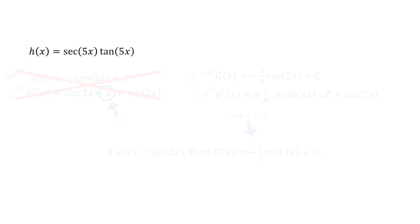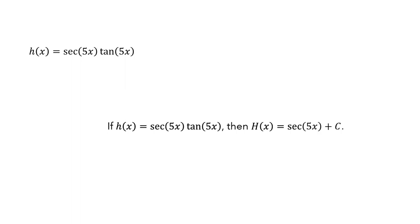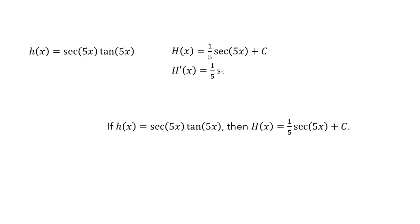Next, let's look at h, which is secant of 5x times tangent of 5x. We have a rule for secant tangent — the antiderivative is secant. Since we have 5x inside, and when we had 2x inside the sine function we had to multiply by one-half, let's try multiplying by one-fifth. So our guess for the antiderivative of h is one-fifth secant of 5x plus c. Using the chain rule, the derivative is one-fifth times secant(5x) times tangent(5x) times 5, and the one-fifth and 5 cancel, giving us secant(5x) times tangent(5x), which matches h.